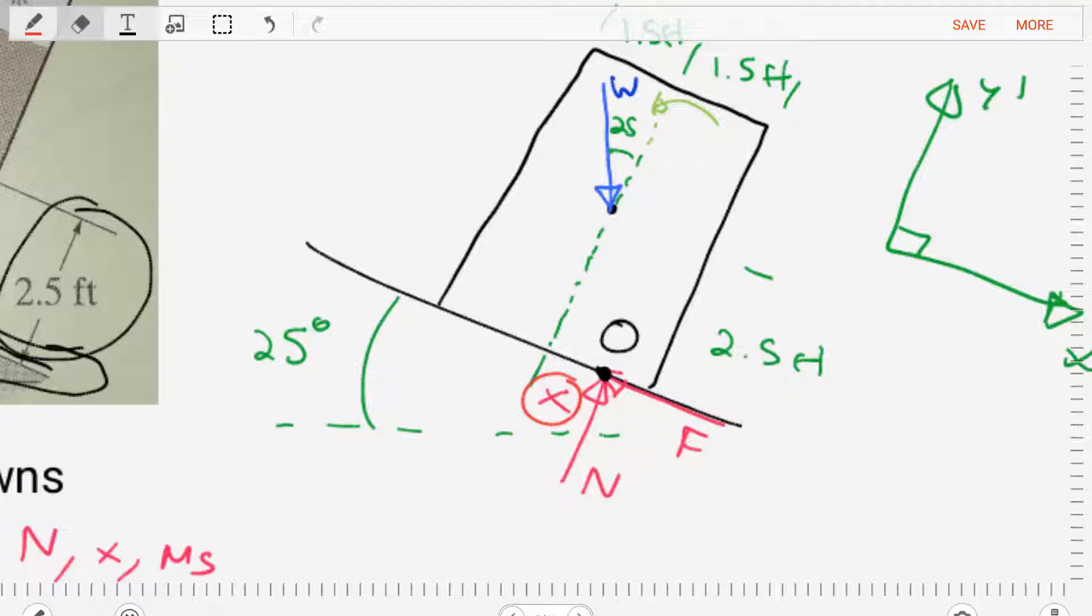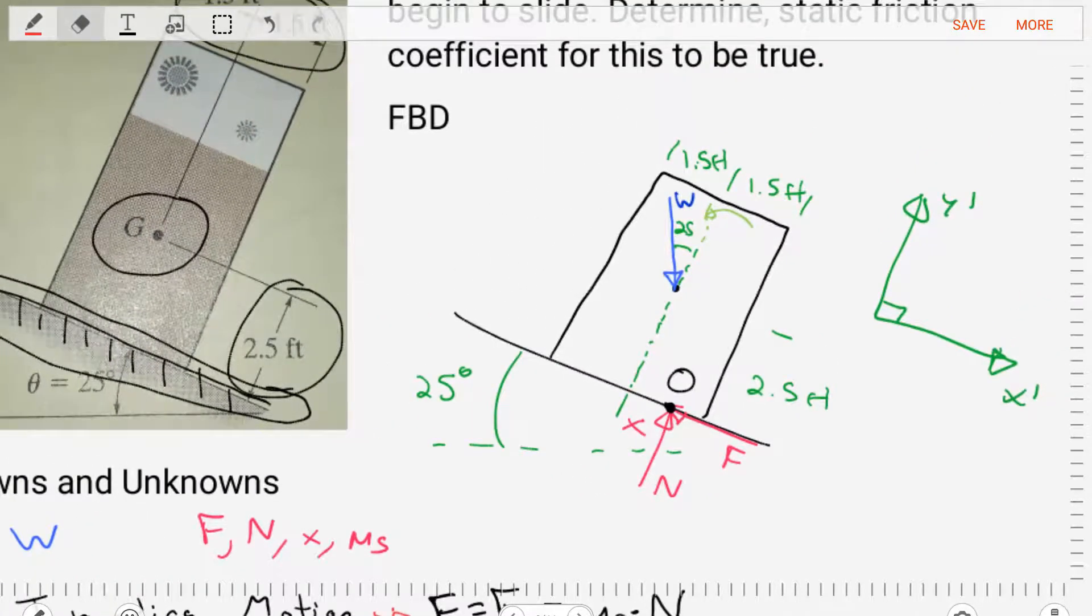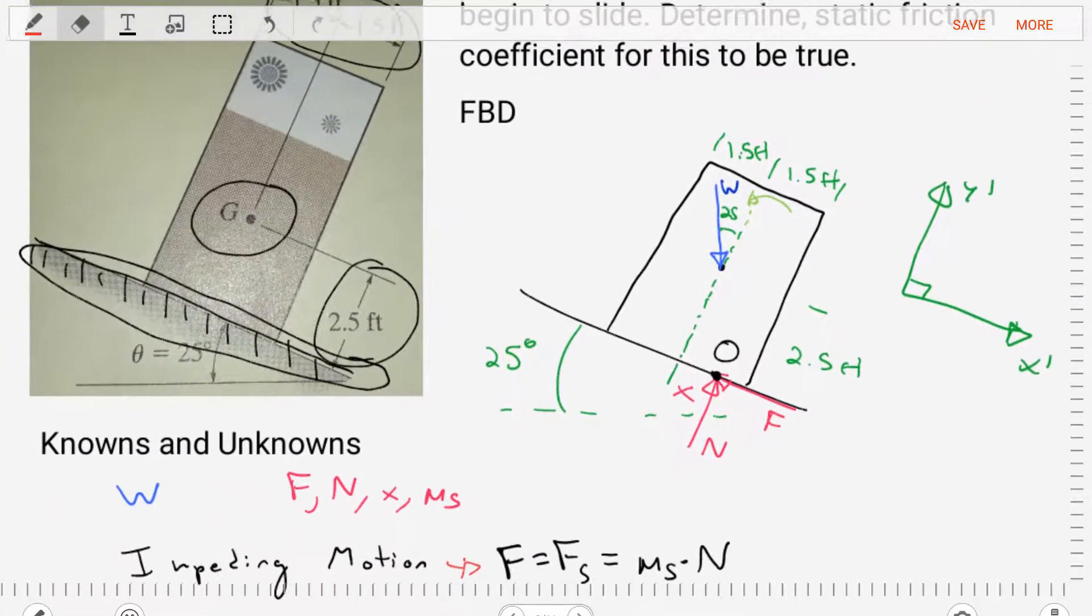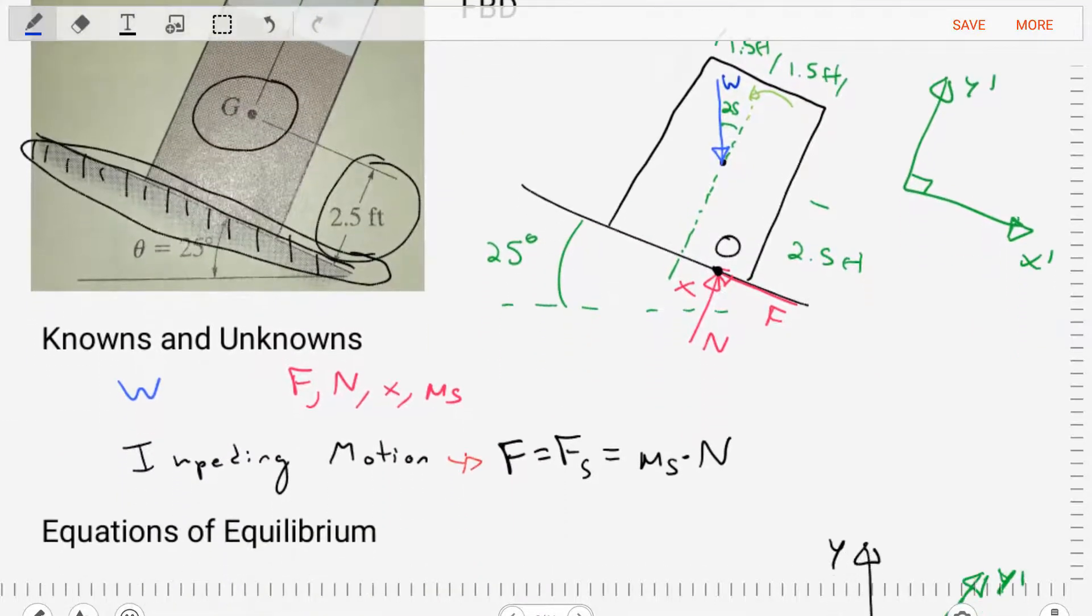So we've got three unknowns in this diagram. Let's now go and list out our knowns and unknowns. In this problem, we're going to assume that the weight of the vending machine is known. We're going to need to find the frictional force, the normal force, the distance X, and of course, the thing that we're interested in, the static friction coefficient.